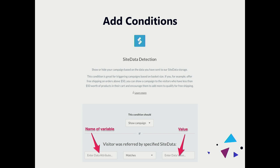In our system, we made it pretty simple: you can trigger a slide-in or a pop-up based on the name of the variable in Google Tag Manager and a value. For example, you want to trigger something based on how much was added to the cart — if they added five things, trigger something. Or if they've been there multiple times and bought before, trigger a slide-in or pop-up.